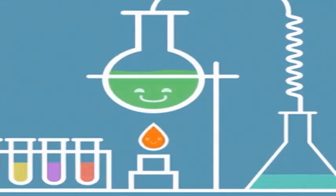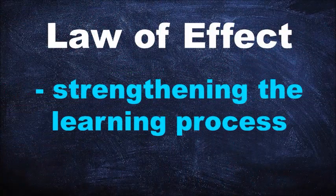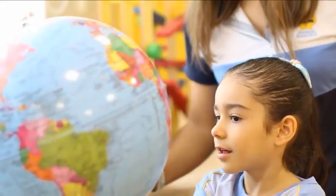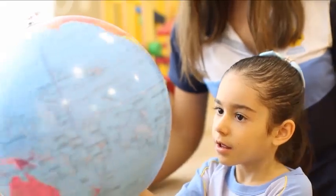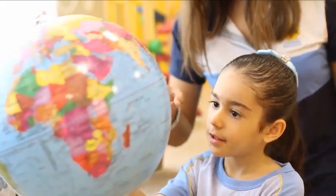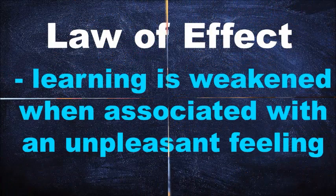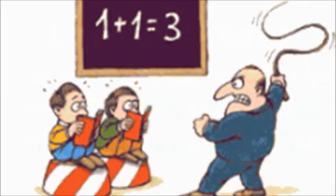This concept will be more understandable if you get to do a hands-on experiment in the laboratory class. Through this, what you learned in the lecture class will be more meaningful. The law of effect can be simplified as strengthening the learning process by connection, or giving the learner a satisfying feeling. And learning will be more established if it is more likely to happen. In contrast, learning is weakened when associated with an unpleasant feeling or if learning is less likely to occur.